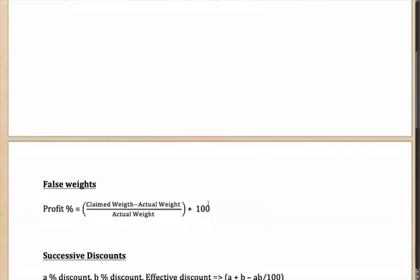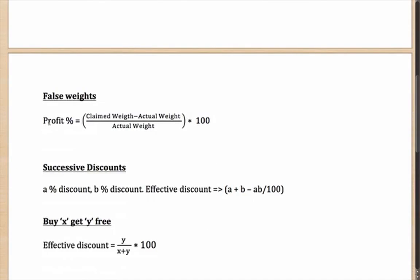Let us start with the first case of false weights. In this case, the merchant makes a profit because he claims to give the customer more than he is actually giving. An example would be if he uses false weight and gives you 960 grams instead of one kilo, then he will make a profit.